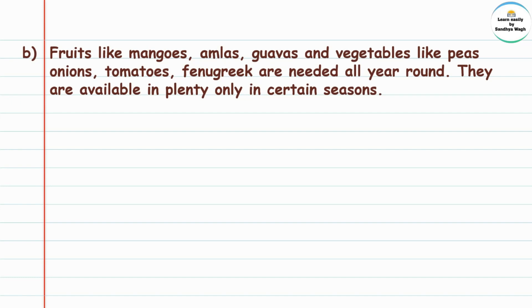Question b: Fruits like mangoes, amlas, guavas, and vegetables like peas, onions, tomatoes, and fenugreek are needed all year round. They are available in plenty only in certain seasons. During certain seasons, these fruits and vegetables are available in large quantities, but we need them throughout the year.